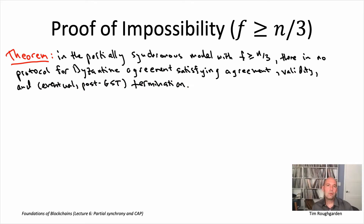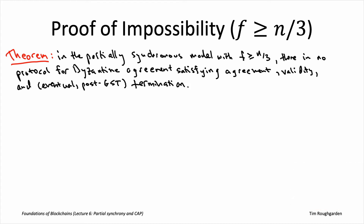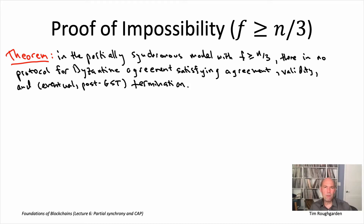We concluded the last video with a basic intuition about why this result is true, and in particular why this seemingly magical 33% threshold is actually quite natural once you're thinking about the problem in the right way. The intuition had two parts, both pretty hand-wavy but still, on some level, reasonably accurate.